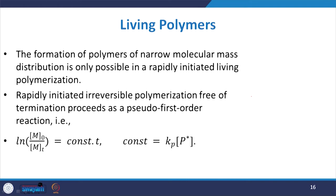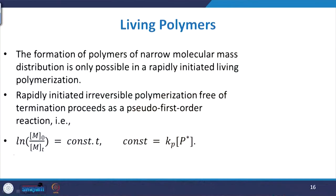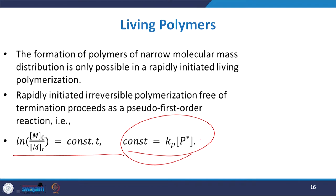The formation of polymers with a narrow molecular mass distribution is only possible in a rapidly initiated living polymerization. Rapidly initiated irreversible polymerization, usually free of termination, proceeds as a pseudo-first-order reaction. This first-order reaction mechanism is represented by the equation: ln(M0 / M(t)) = Kp × [P] × t, where Kp is the propagation rate constant and M(t) is the monomer concentration at time t.